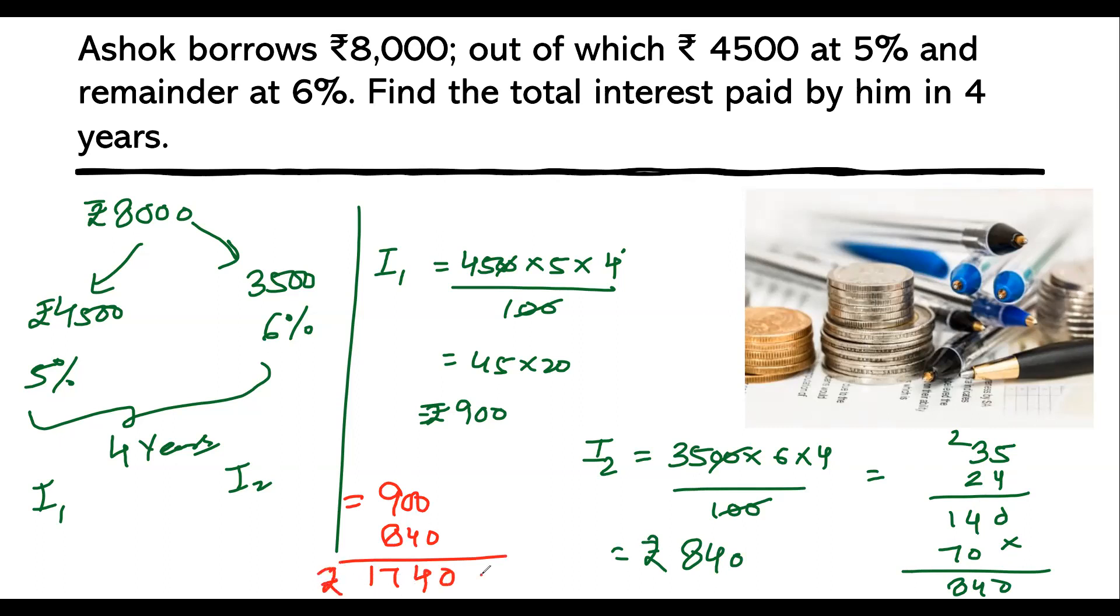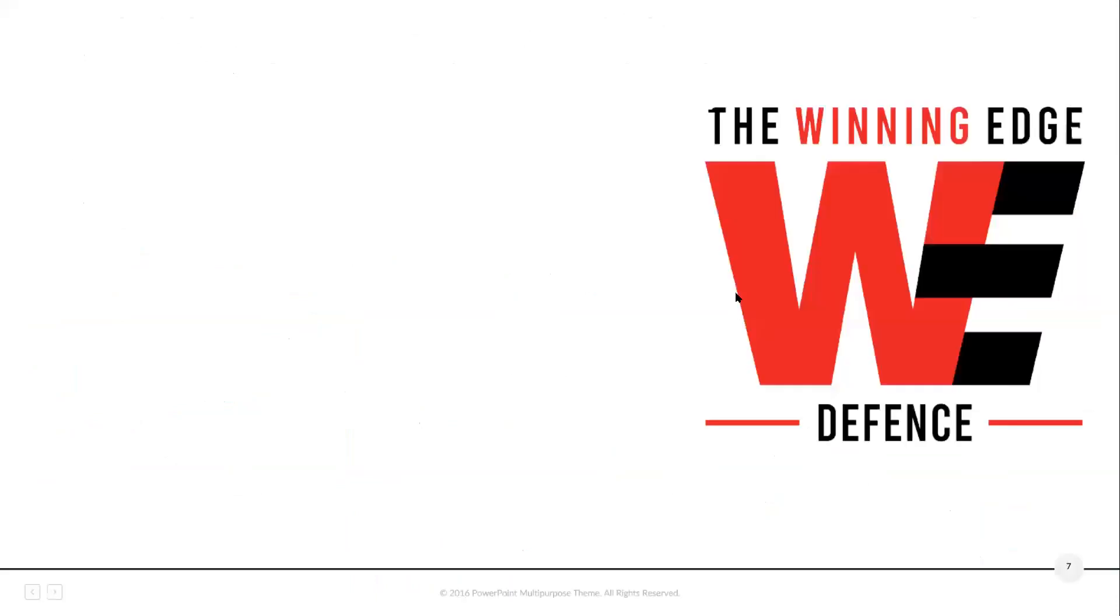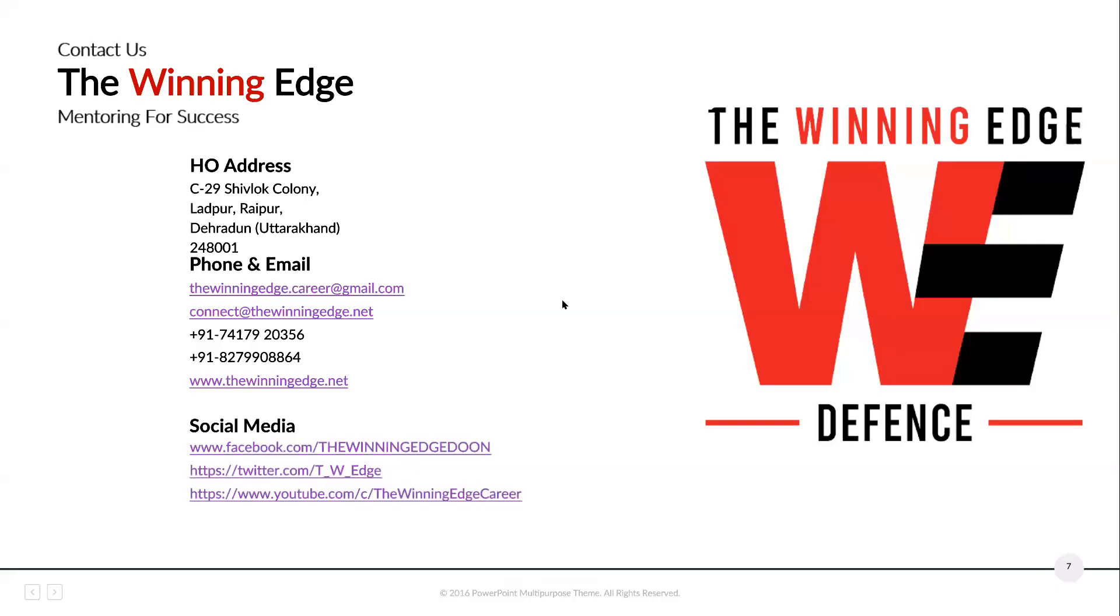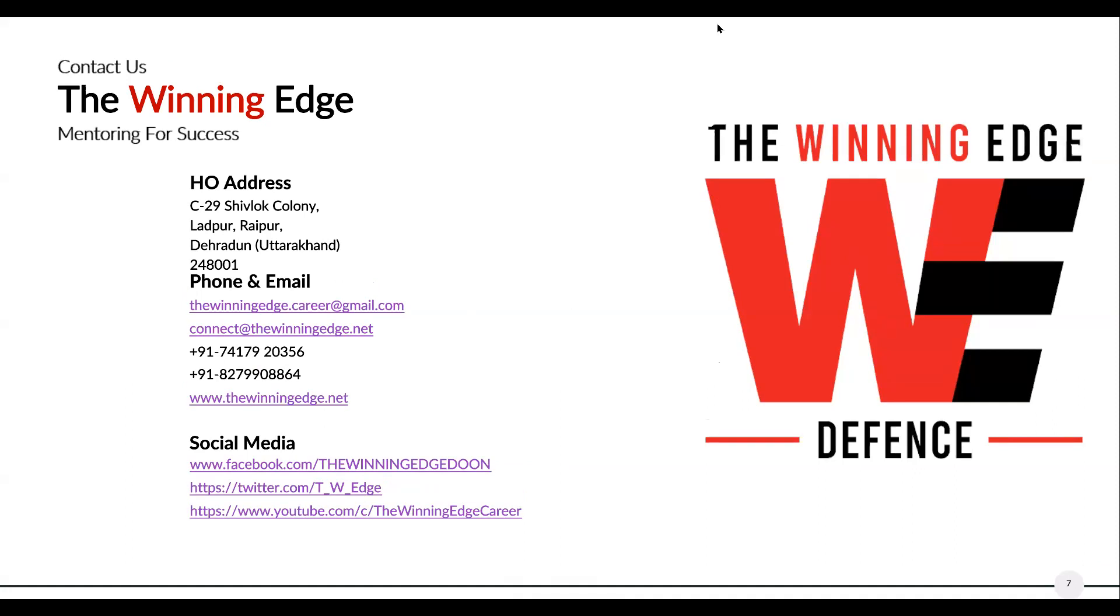Total interest is I1 + I2 which is 900 + 840 which is 1,740 rupees. I hope you understood this question and this video. If you have anything to ask, please make sure you put it down in the comment section. If you have any doubts, you can reach out on the following details. This is Winning Edge, I am Daljinder Singh, your mentor for mathematics. These are our details where you can reach out: phone number, email, social media handles and links are given. Feel free to reach out or at least leave a comment. Thank you for watching this video from the Winning Edge.